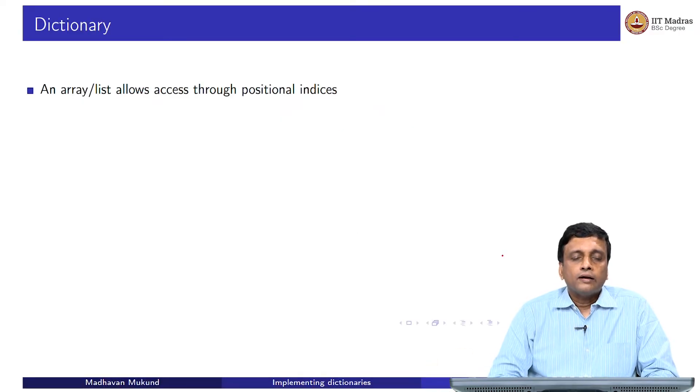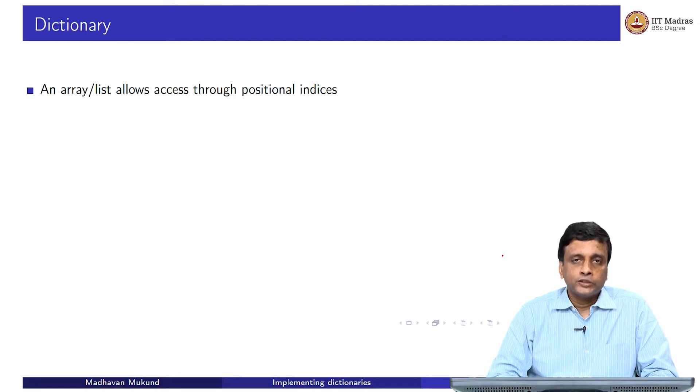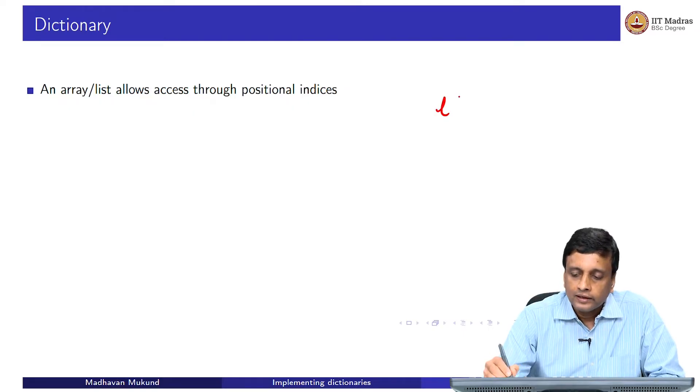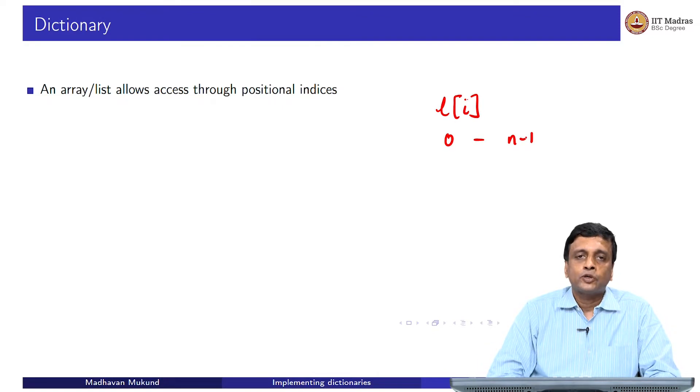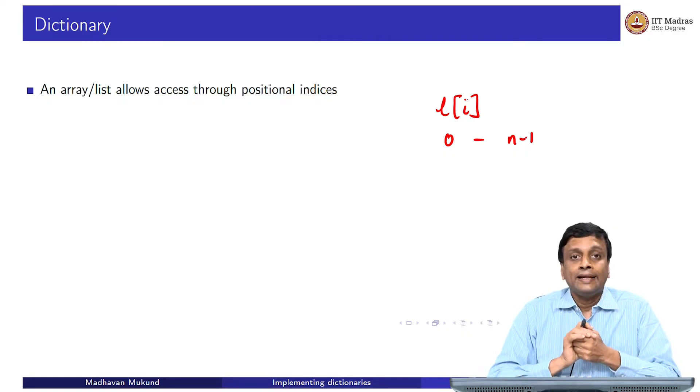Recall that an array or a list allows us to access an element through its position. We can talk about L[i] and i will range between 0 and n-1 where I have a list or an array of size n. The way we access an element or we name an element in a list or an array is through its position.